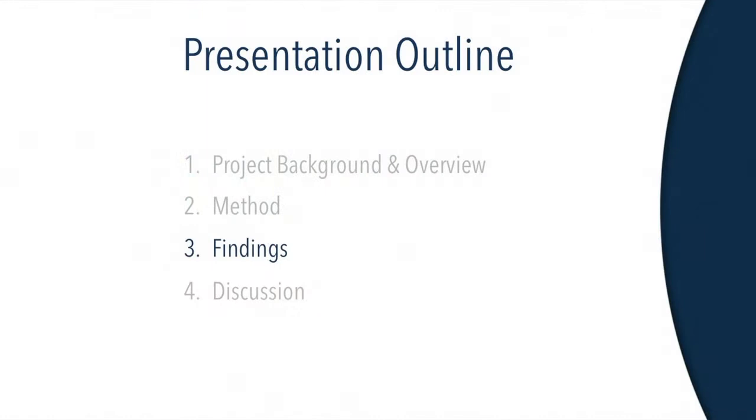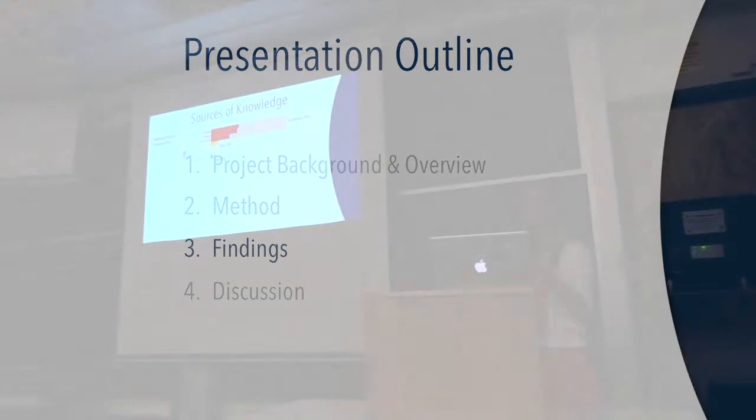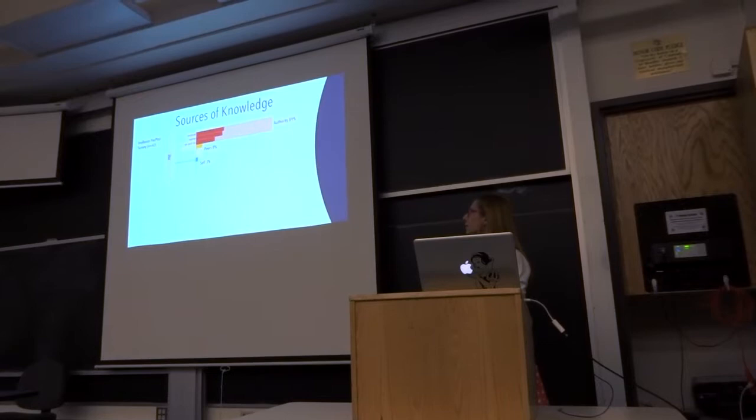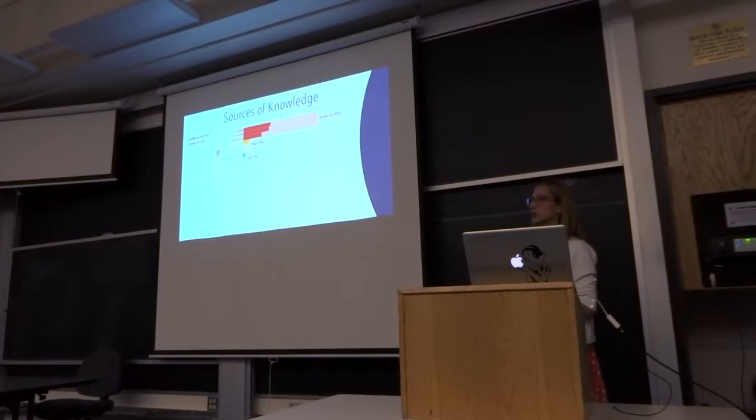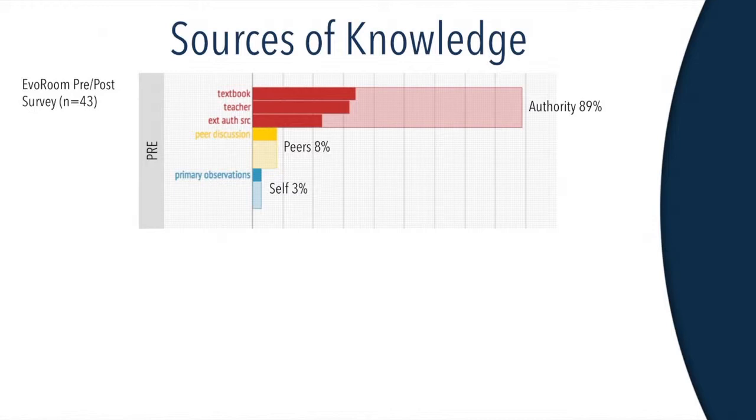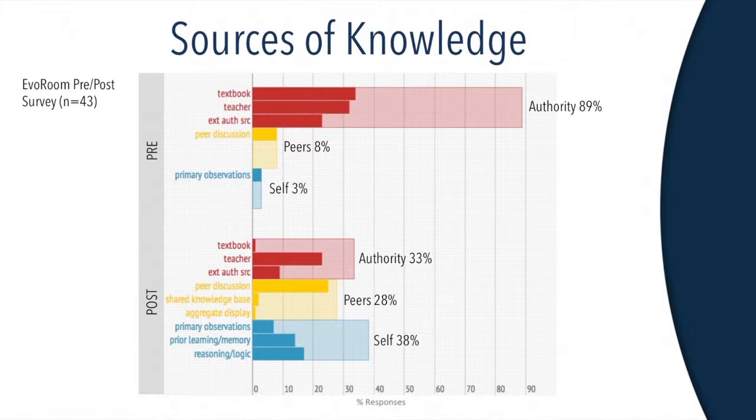Some of the key findings—and again, I'm focusing just on the sources, justification, and epistemic stance dimension here. A survey was administered before and after enacting the Evo Room curriculum. This was an open-ended survey item that asked students to identify their sources of knowledge in school science. Students would just list sources of knowledge that they used throughout school science. The pre-survey revealed a heavy reliance on authoritative sources of knowledge. 89% of the responses depended on authority: things such as the textbook, the teacher, and external authoritative sources such as the internet or journals. However, following the enactment of the Evo Room activity, there was more of a balance between authority, peers, and the self as sources of knowledge. Peers included things like peer discussion, access to the shared knowledge base, or use of the aggregate display. And the self included things such as primary observations, prior learning or memory, as well as reasoning or logic.